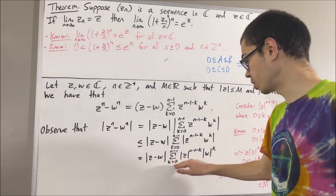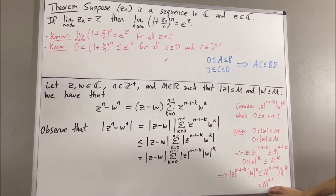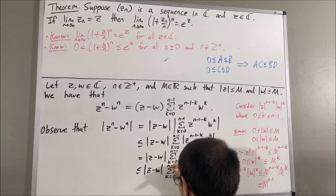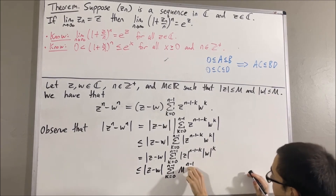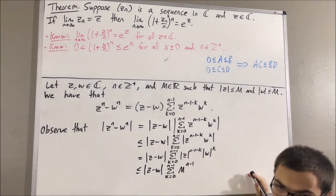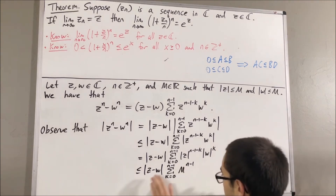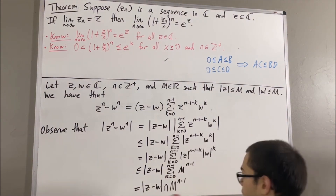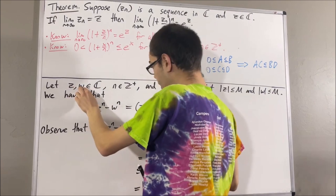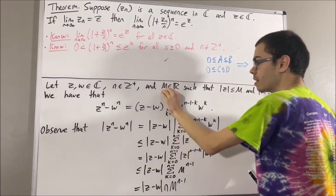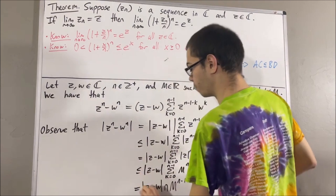So the sum from k equals 0 to n minus 1 of this expression must be less than or equal to the sum from k equals 0 to n minus 1 of M to the n minus 1. Since we are adding M to the n minus 1 by itself n times, this is just equal to n times M to the n minus 1. So we have shown: given any complex numbers z and w, any positive integer n, and any real number capital M with these two properties, we have that the absolute value of z to the n minus w to the n is less than or equal to n times the absolute value of z minus w times M to the n minus 1.